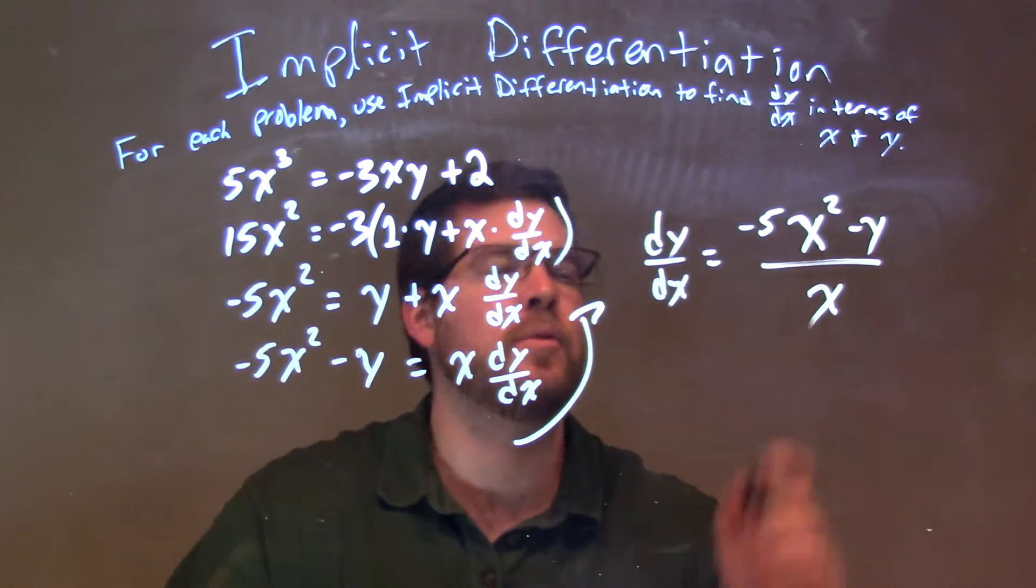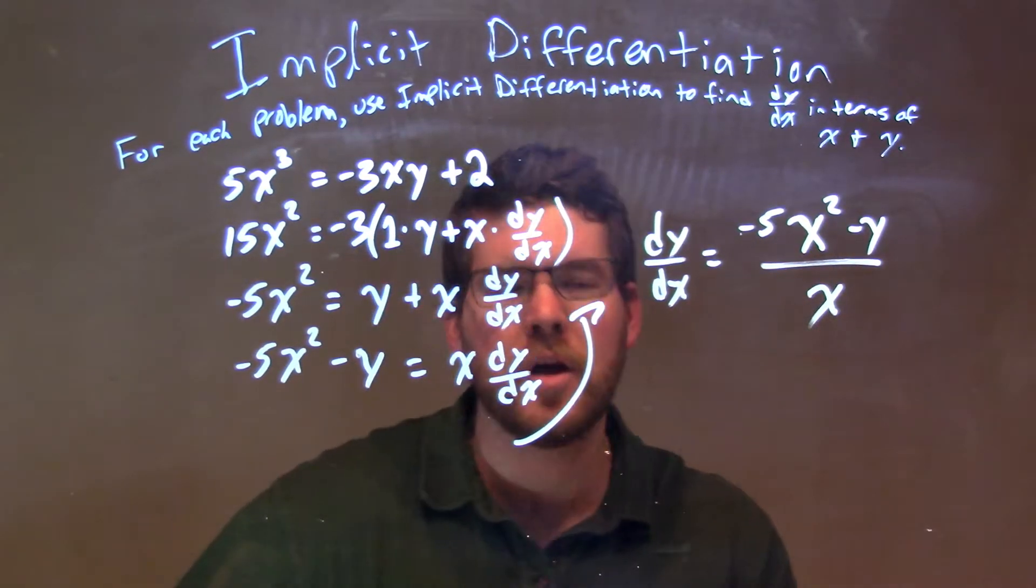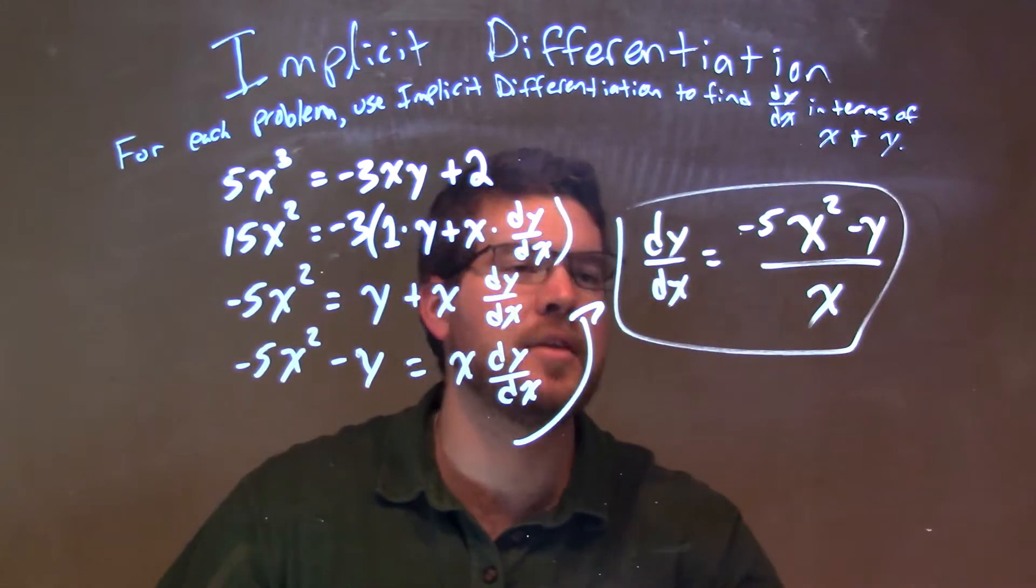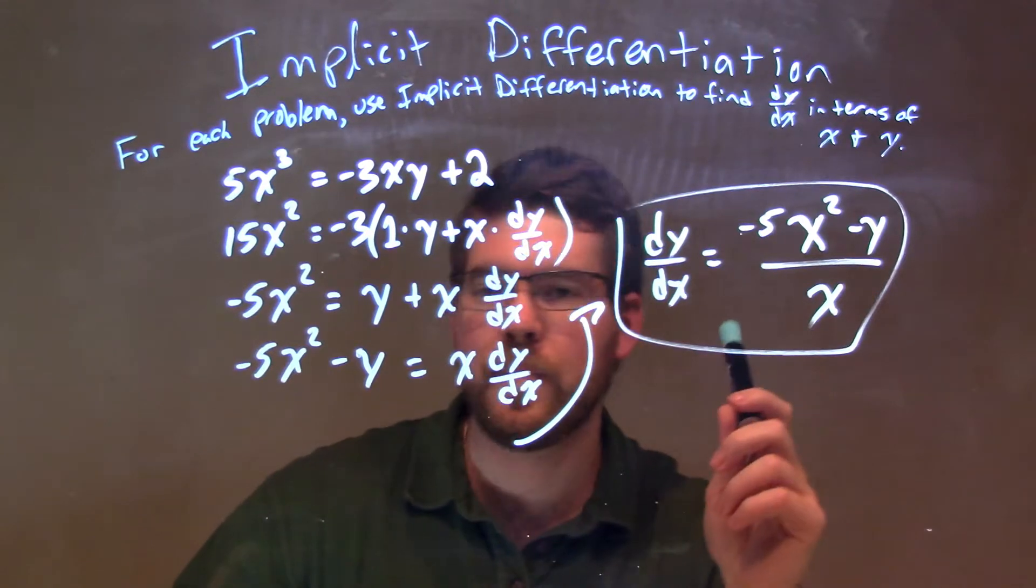Now, what some people might do is see that there's a negative in both parts. If you pull that up front and make both these positive, we're really up to you, but either way we have a final answer here, dy/dx is equal to negative 5x squared minus y over x.